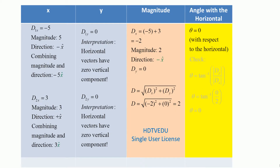Let's take the first vector, d1. It is 5 units to the left, so we put negative 5. The magnitude is 5, and the direction is horizontally to the left — negative x. When we combine magnitude and direction, we say it is negative 5 x-hat. The vertical component of d1 is 0, since it is a horizontal vector.